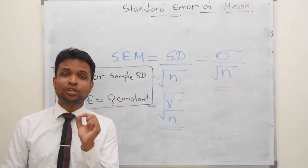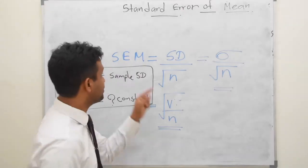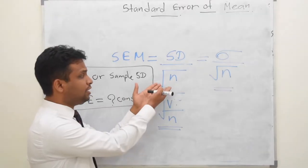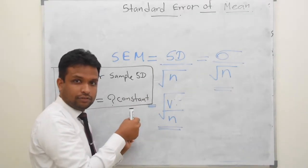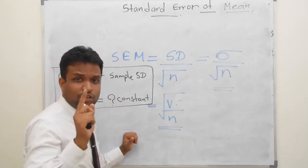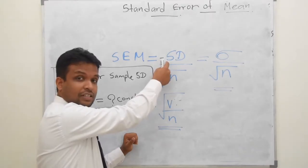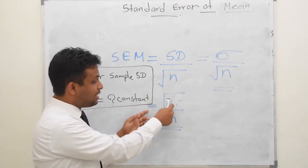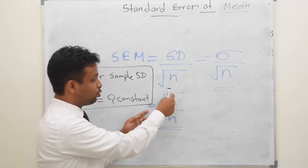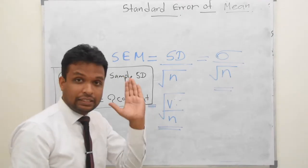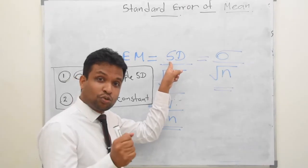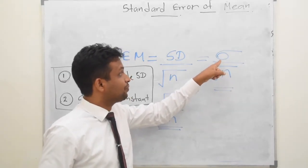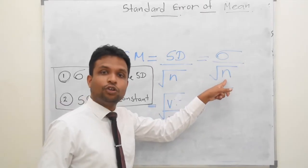Let's quickly see how to calculate the standard error of the mean. Standard error of mean equals standard deviation divided by the square root of n. We know that standard deviation is the square root of variance, so we can also write it as the square root of variance divided by n. The standard deviation here is actually the population standard deviation sigma, so we can write it as sigma divided by square root of n.